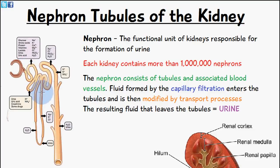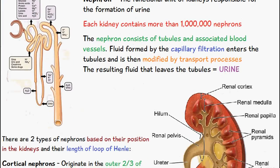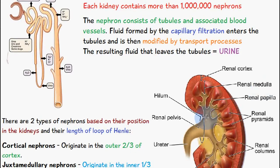The fluid that remains in the tubule is known as urine. This urine filters into the renal pelvis and passes through via the ureter to the urinary bladder.